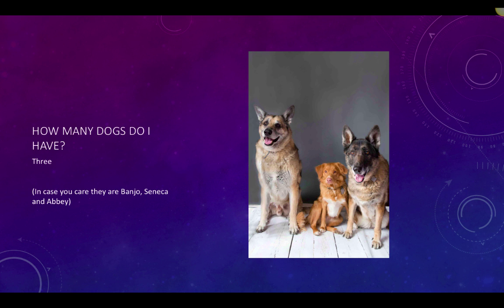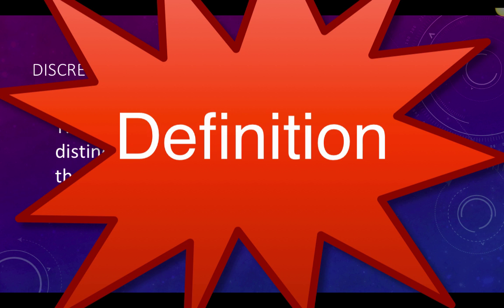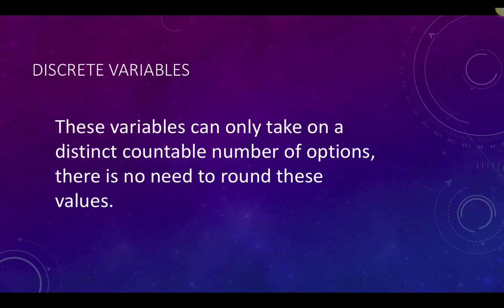In contrast, consider a question like this. How many dogs do I have? There they are. There are three of them. In case you care, they are Banjo, Seneca, and Abby, listed from left to right. There's no need to round the number of dogs I have. There are three distinct dogs. These variables can only take on a distinct countable number of options. Therefore, they are called discrete.